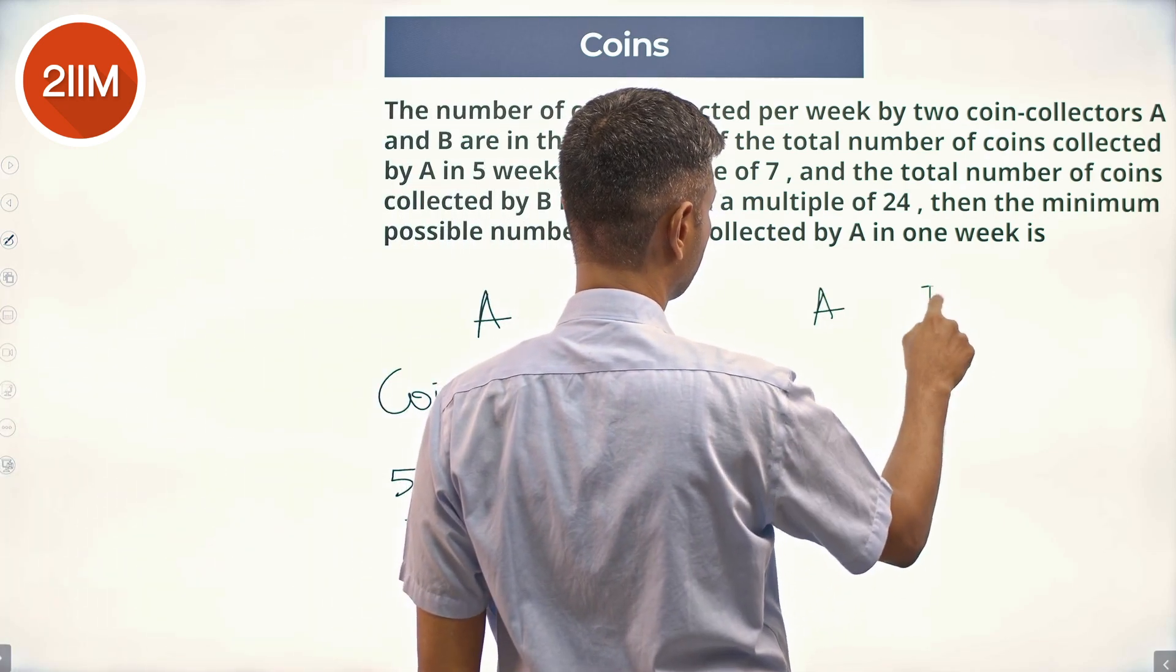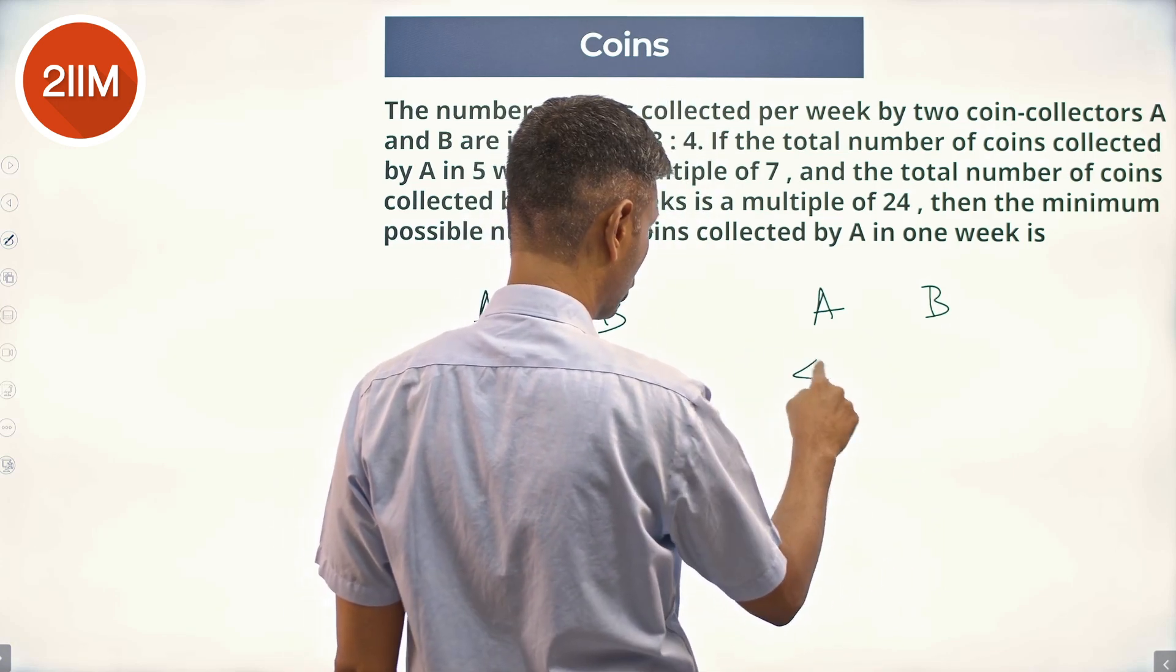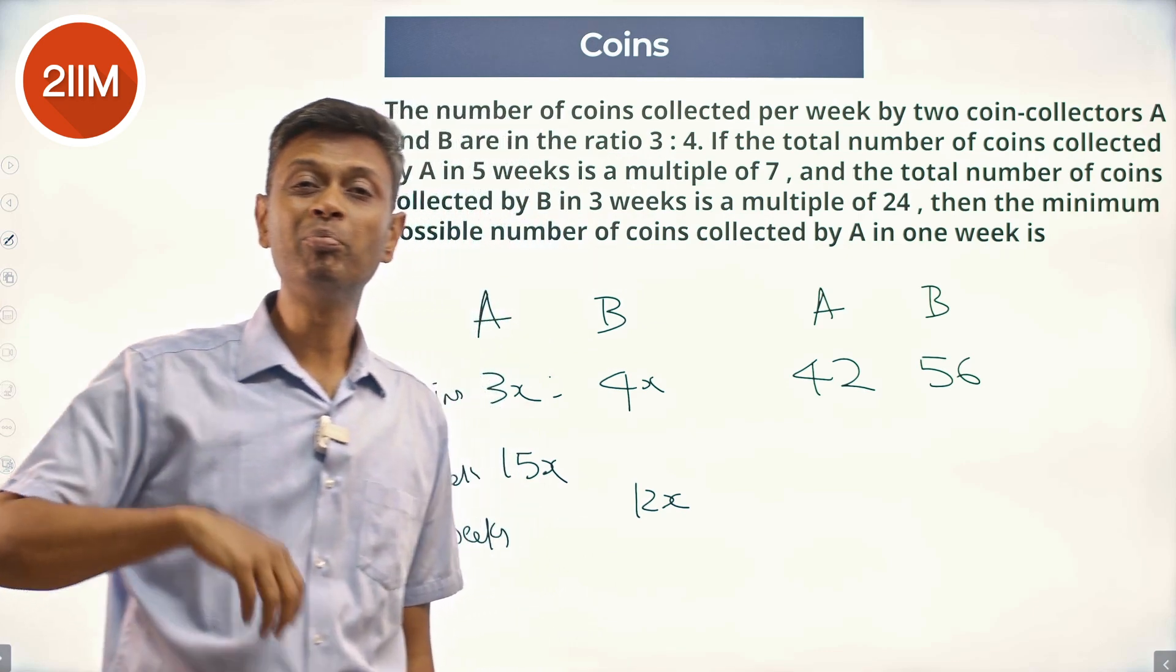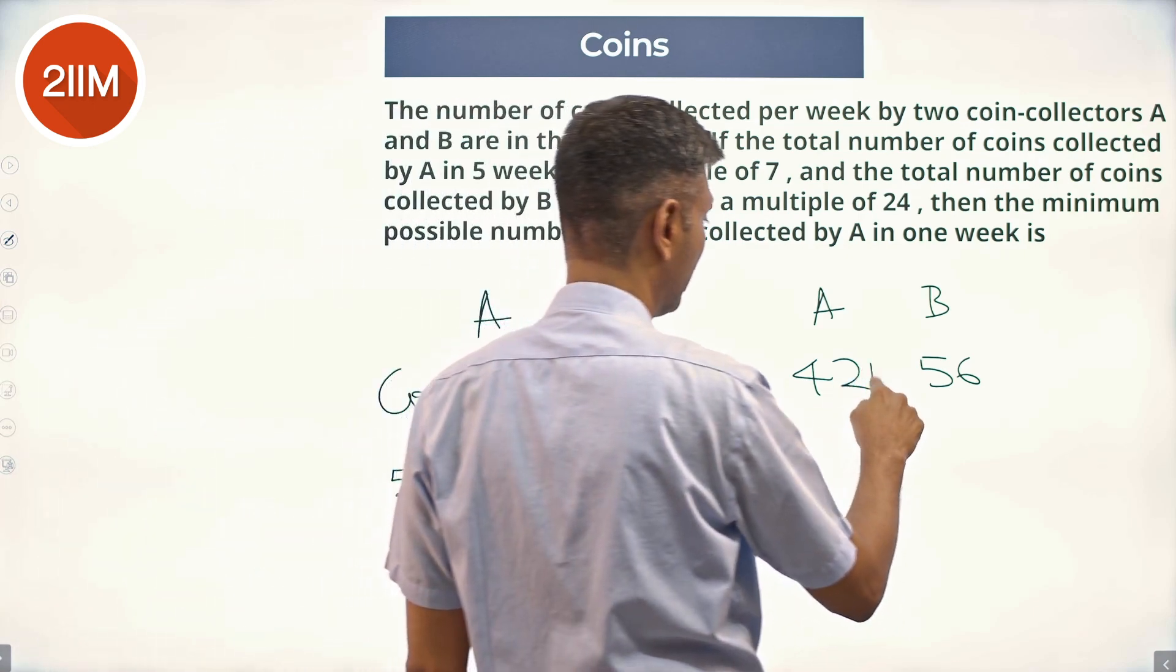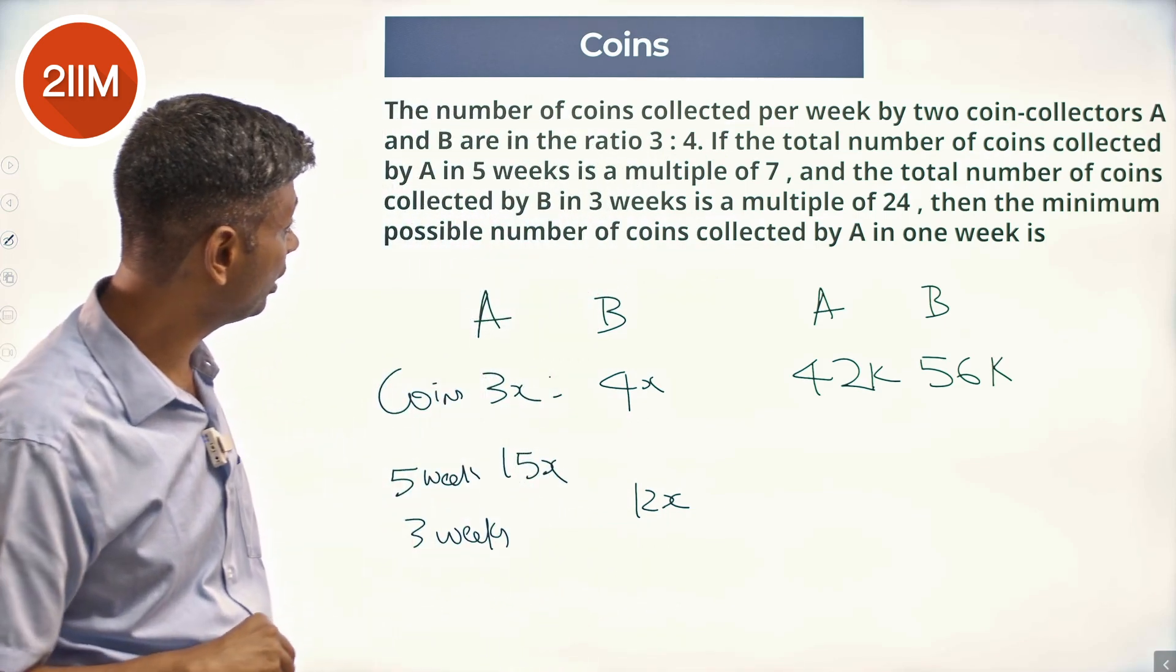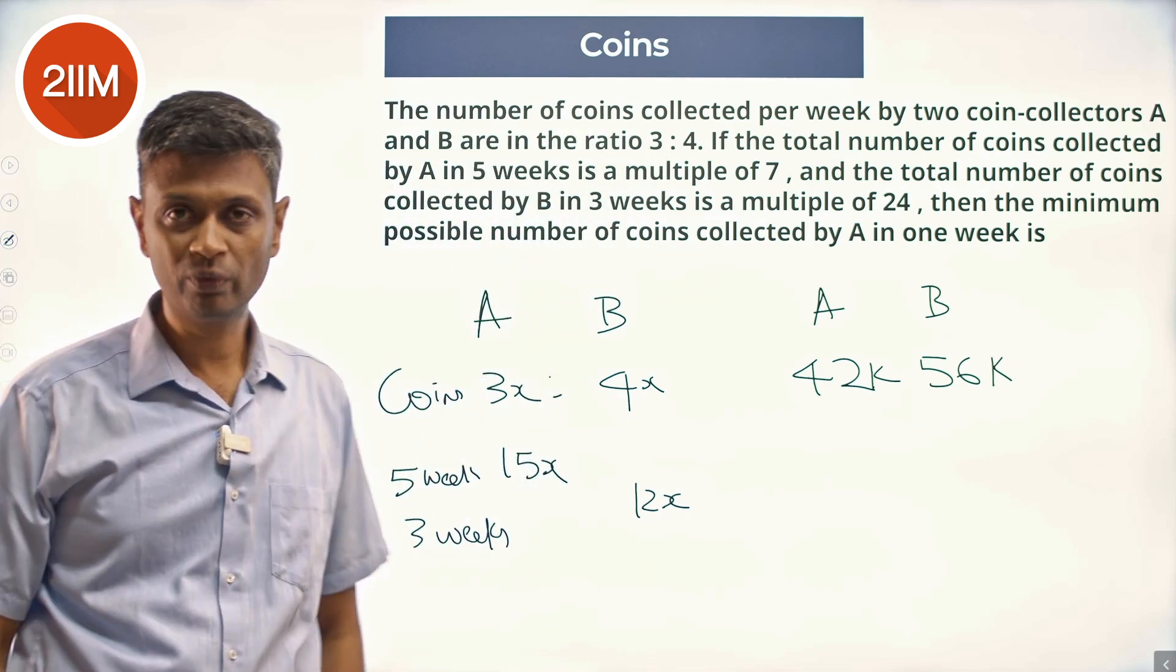So I am going to simplify this. Let us say A and B, 3 times x is 42, 4 times x is 56. This is 42k and 56k. So the minimum A can bring in 1 week is 42, when k is 1.